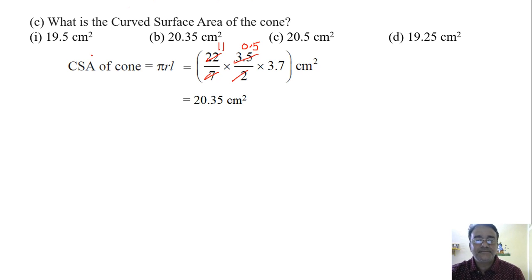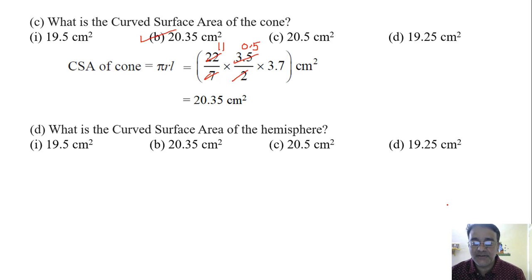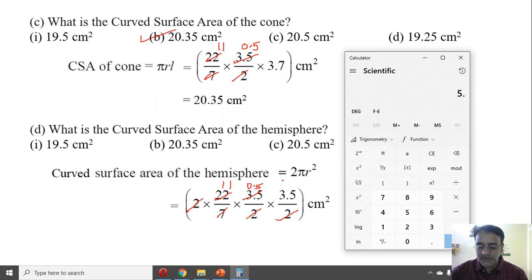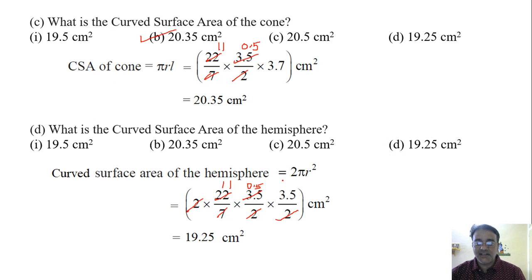What is the curved surface area of the hemisphere? The formula is 2πr². We substitute the values of π and r. After canceling, we get 5.5 into 3.5, which equals 19.25 cm². So option D is the correct answer.